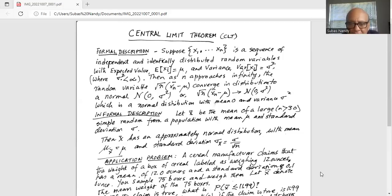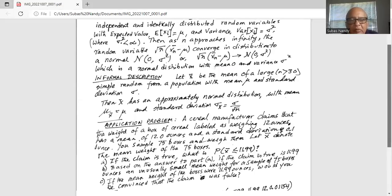And standard deviation sigma x bar is equal to population standard deviation sigma divided by square root of n or square root of sample size. Application.